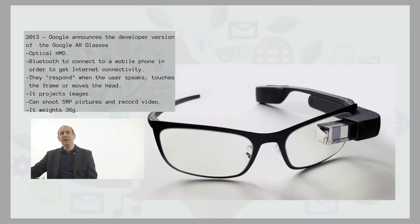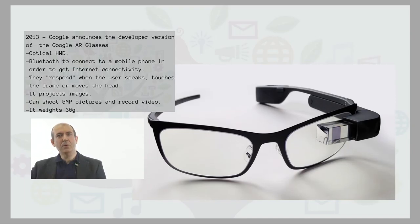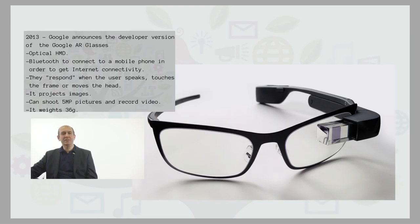Now let's come closer to our days. In 2013, Google announced the developer version of the Google AR glasses. The Google glasses are an optical head-mounted display. They have Bluetooth to connect a mobile phone in order to get internet connectivity. These glasses respond when the user speaks, touches the frame, or moves the head. They can project images and can also record pictures at 5 megapixel resolution and also record video.